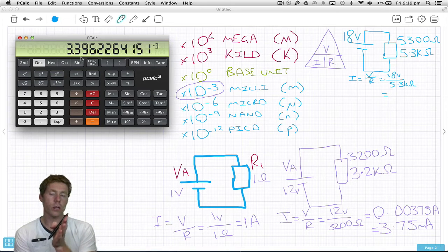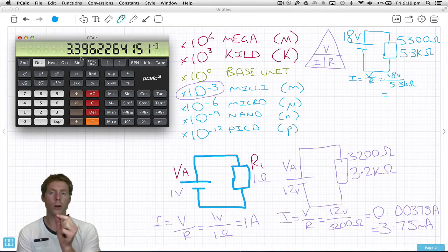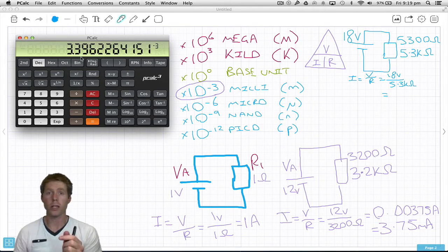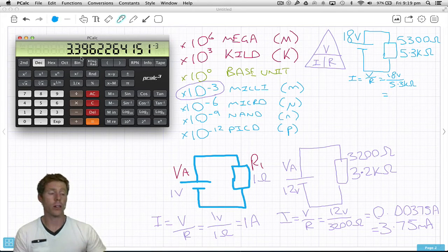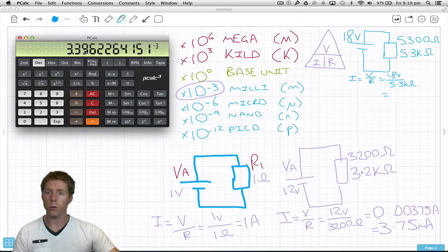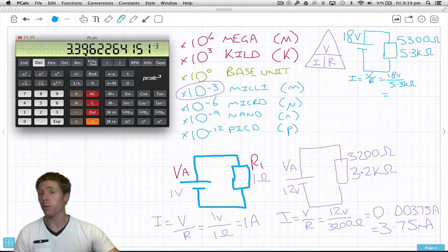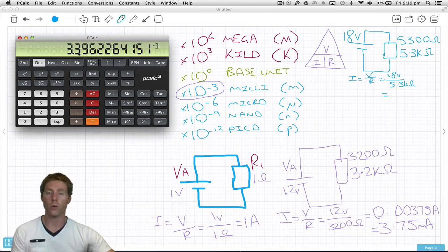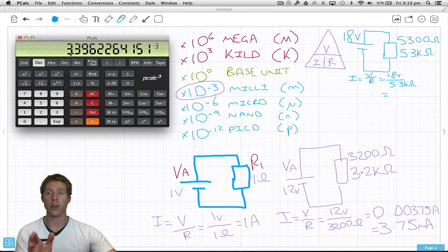One last thing: we're going to round all our answers to two decimal places because that gives us a good degree of accuracy. We don't need all these other numbers. We've got 3.396. If we round to two decimal places, that 6 would round the 9 up to 0, which would round the 3 up to 4.